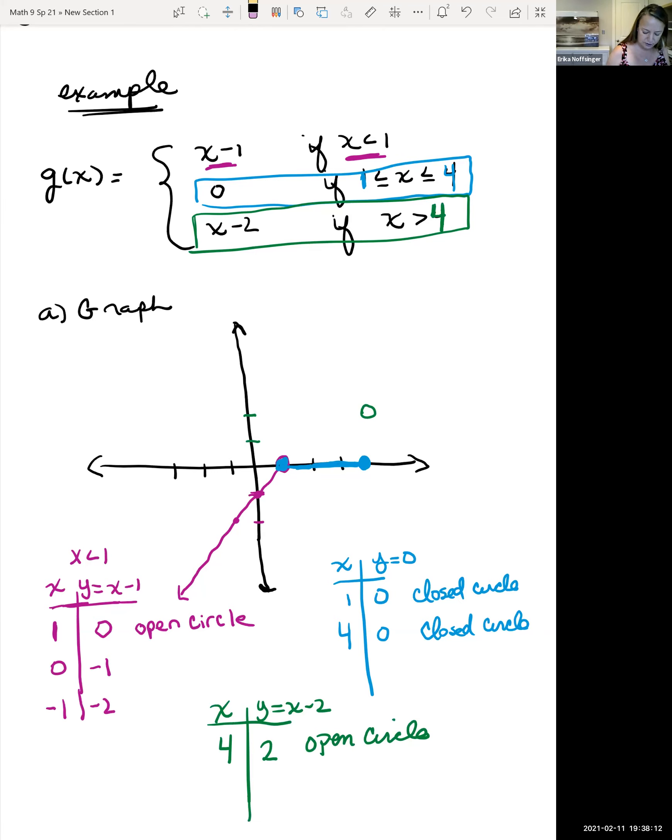Choosing any number bigger than 4, so 5, 5 minus 2 is 3. So 5, going up 1. Now my graph is a line and it's going to look like this on the right of 4. Okay, so first part of the problem, I wanted us to graph that piecewise function.